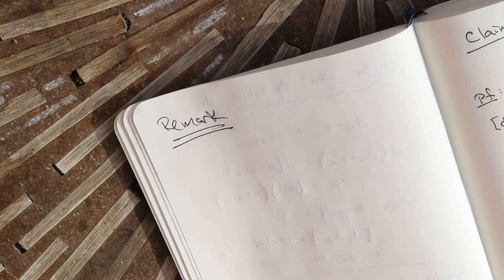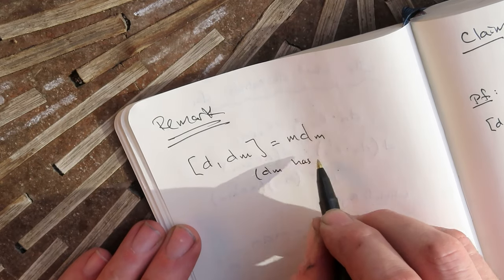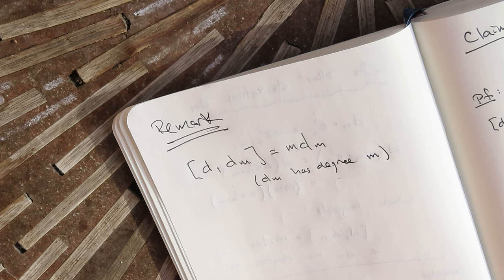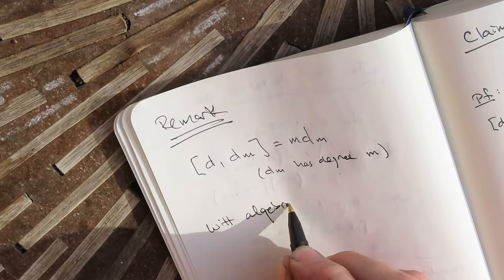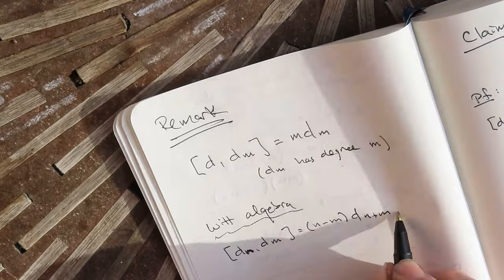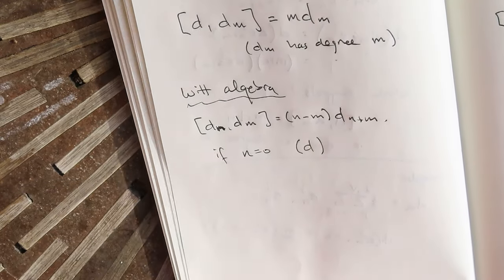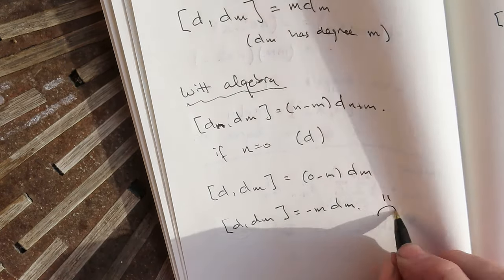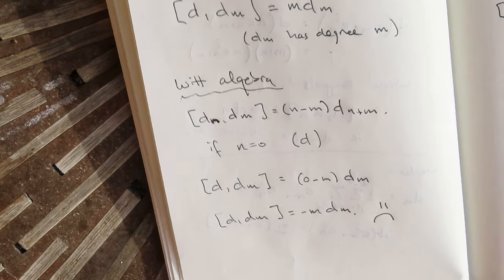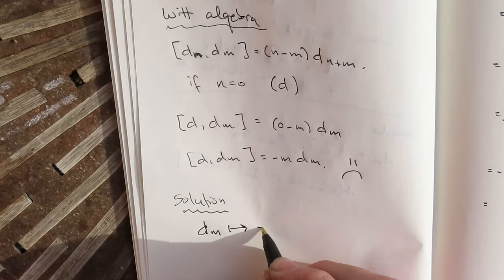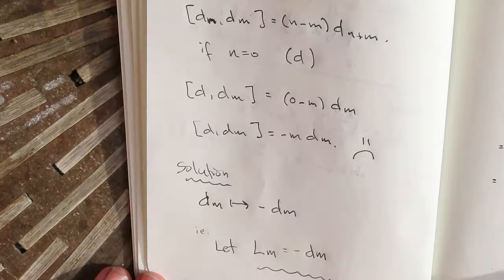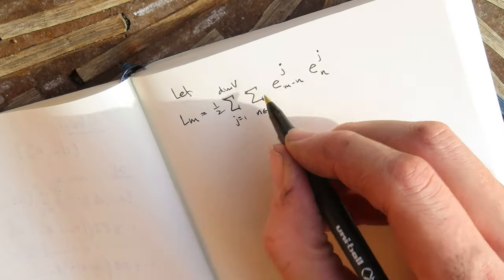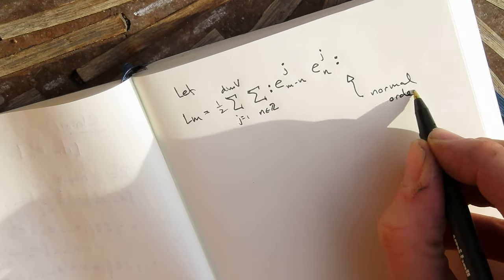One note is in order. We already discussed that D acting on D_m must give m D_m. But from the perspective of the Witt algebra, D_n with D_m should be (n minus m) D_{m+n}, so D_0 with D_m should give minus m D_m — we're off by a minus sign. So we simply multiply through by minus signs everywhere and define operators L_m as minus D_m. To be precise, L_m is defined as one-half, the sum over vector space indices, the sum over the integers, the normally ordered product of e_{i,m-n} e_{i,n}. That normal ordering matters only when m equals zero, but we leave it there.